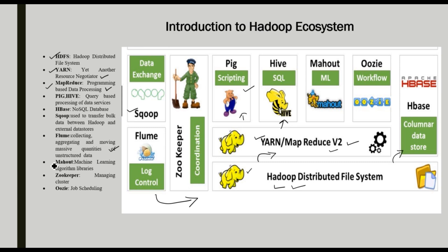Next is Mahout. The word Mahout comes from Hindi — it means an elephant handler or trainer. Mahout is a machine learning framework used within the Hadoop ecosystem. When we do data analysis, we use Mahout for machine learning.